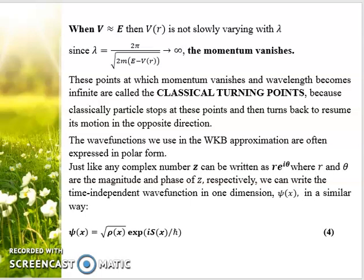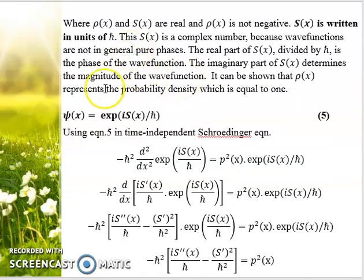The wave functions in WKB approximation are often expressed in polar form. Just like any complex number z can be written as r exp(iθ), we can write the time-independent wave function in one dimension ψ(x) as √ρ(x) exp(iS(x)/ℏ), where ρ(x) and S(x) are real and ρ(x) is not negative. S(x) is written in units of ℏ. S(x) is a complex number because wave functions are not in general pure phases. Through calculations of probability density, ρ(x) becomes one, so we have ψ(x) = exp(iS(x)/ℏ).